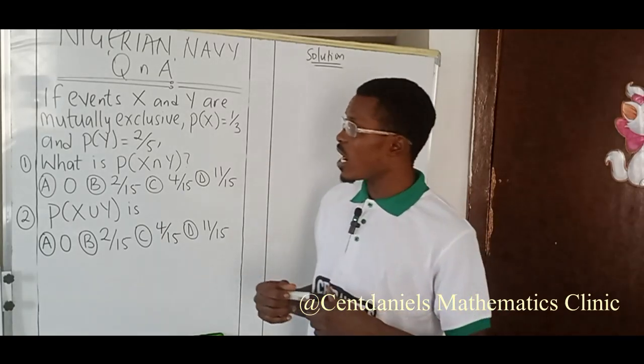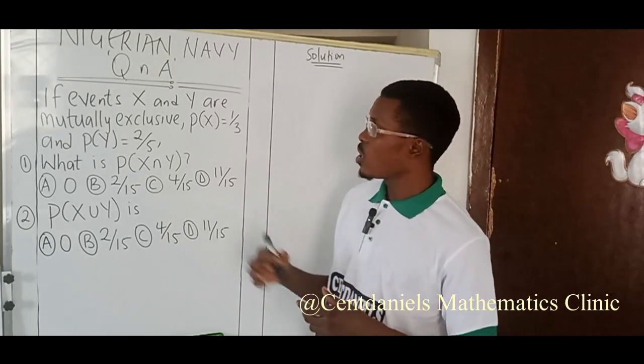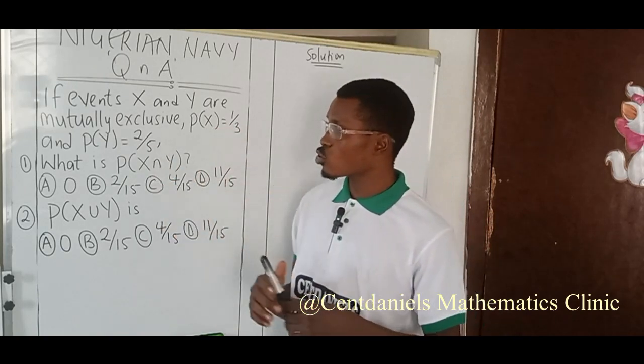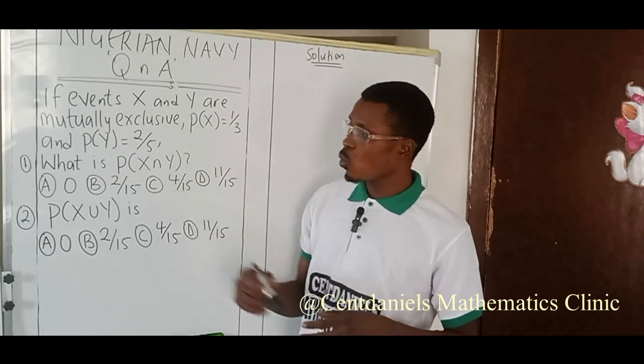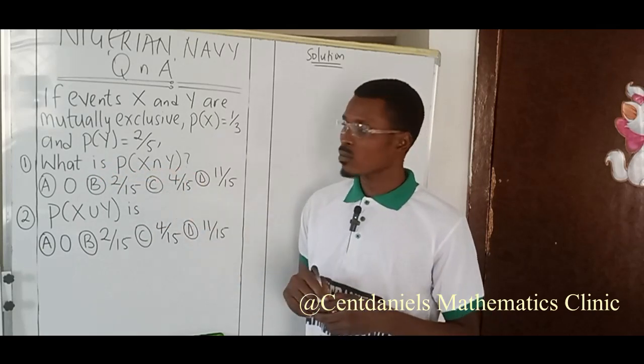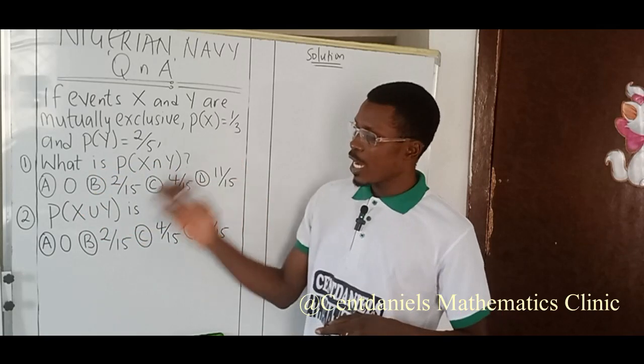If events X and Y are mutually exclusive, probability of X equals one over three, and probability of Y equals two over five. Number one: What is probability of X intersection Y? You have the options given. And number two: Probability of X union Y is? You have the options given.